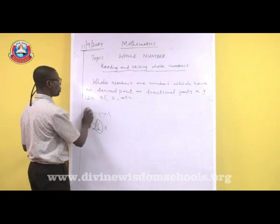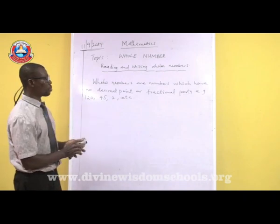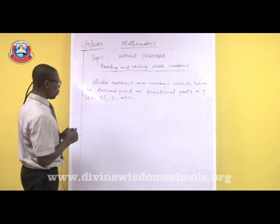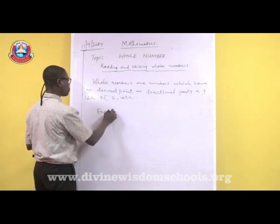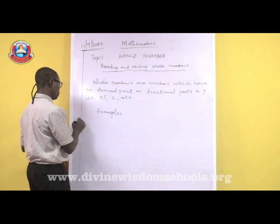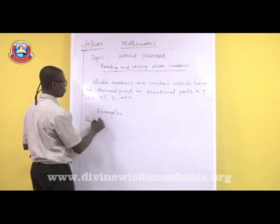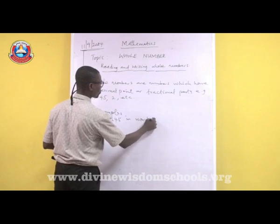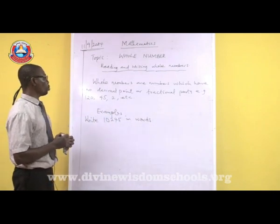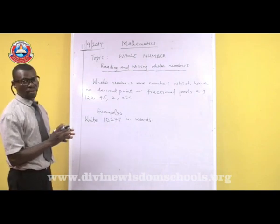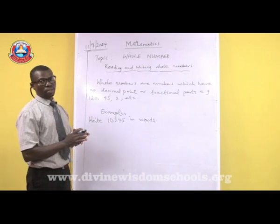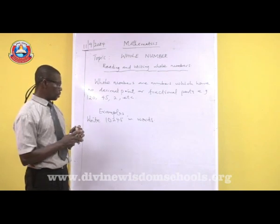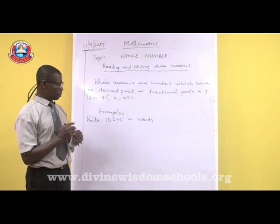Today in the course of this teaching, we shall be considering how to read and write whole numbers in words. For example, write 10245 in words. The first thing you do is look at the category the number belongs to — is it units, tens, hundreds, thousands, or tens of thousands? That will help you write this value in words.